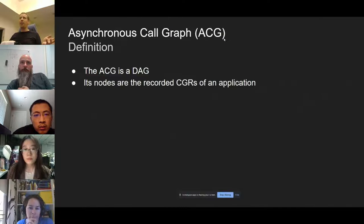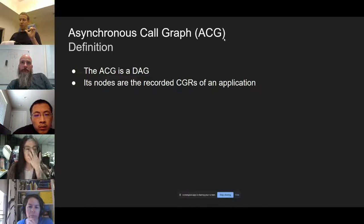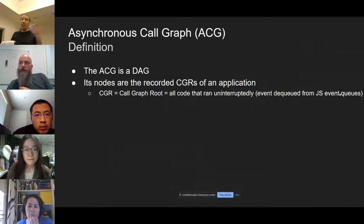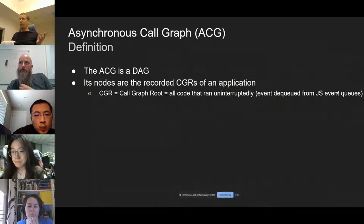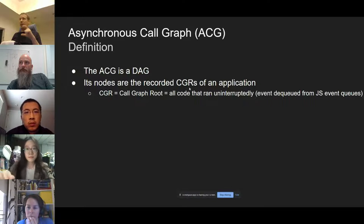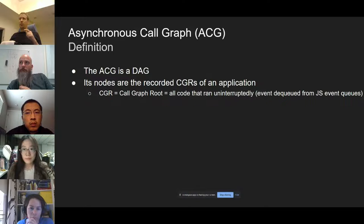The ACG is a DAG. The nodes are atomic pieces of code that run because they are dequeued from the JavaScript event queue. They start when dequeued and run to completion without interruption because of the non-preemptive property of JavaScript. These pieces of code that run uninterruptedly are called call graph roots, and these are the nodes of our ACG.